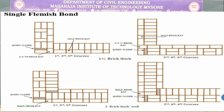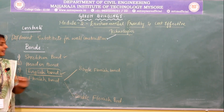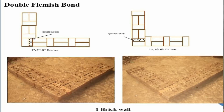For the single Flemish bond in a two brick thick wall — where the thickness equals the length of two bricks — the front face is Flemish bond and the back face is English bond. Depending on the requirement, half brick bats are used along with queen closers placed vertically and horizontally in odd and even courses. In double Flemish bond, as the figure shows, both the front face and the back face resemble the Flemish bond itself, giving a good appearance when compared to single Flemish bond or English bond.